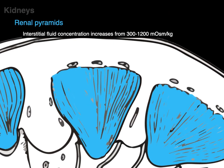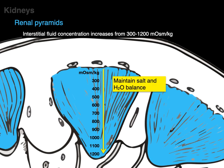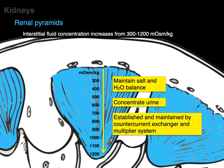The renal pyramids have an interstitial fluid concentration that increases from the base at 300 milliosmoles per kilogram — equivalent to normal plasma — all the way down to the apex at 1,200 milliosmoles per kilogram. This gradient of interstitial fluid concentration in the renal medulla helps maintain salt and water balance and concentrates urine when necessary. This gradient is established and maintained by the countercurrent exchanger and countercurrent multiplier system.